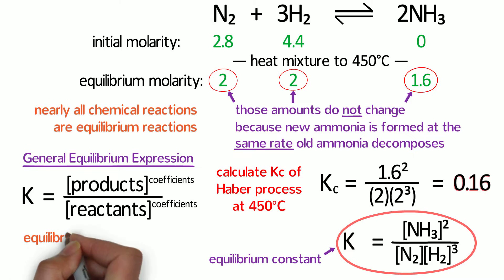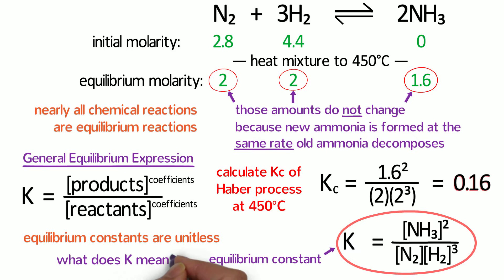Interestingly enough, equilibrium constants are unitless because the concentration values we use in the calculation are all relative to the standard concentration, that is, relative to 1 mol per liter. But what does the equilibrium constant even mean?